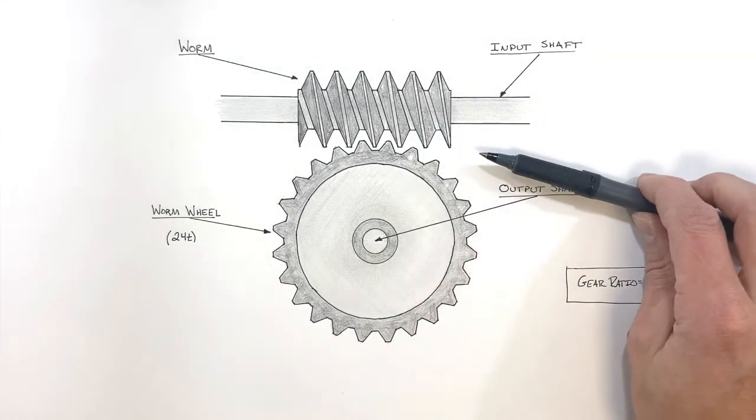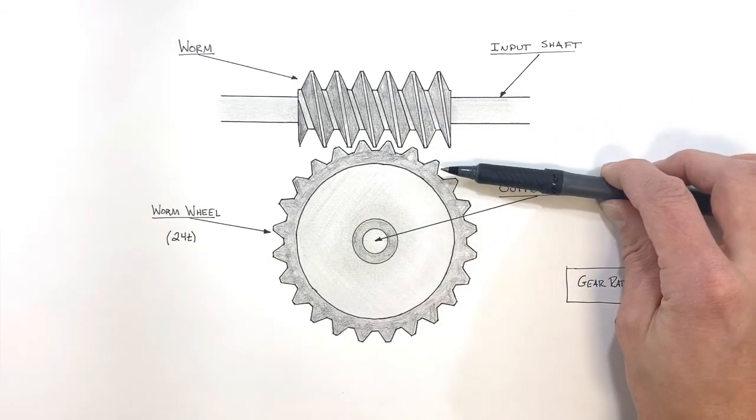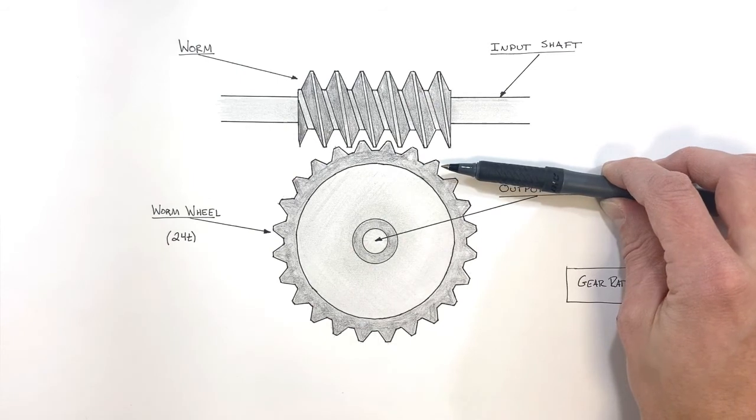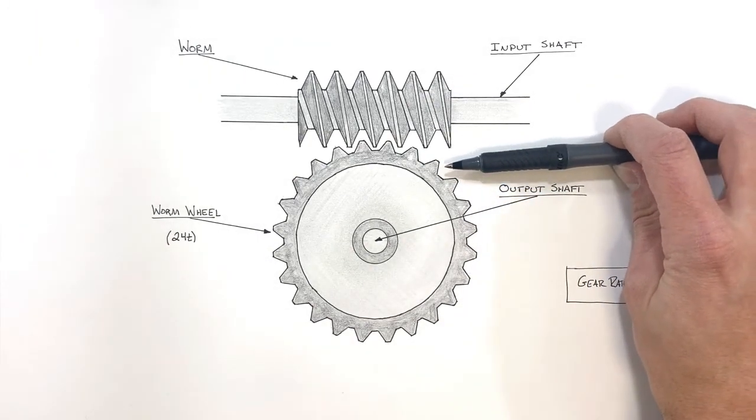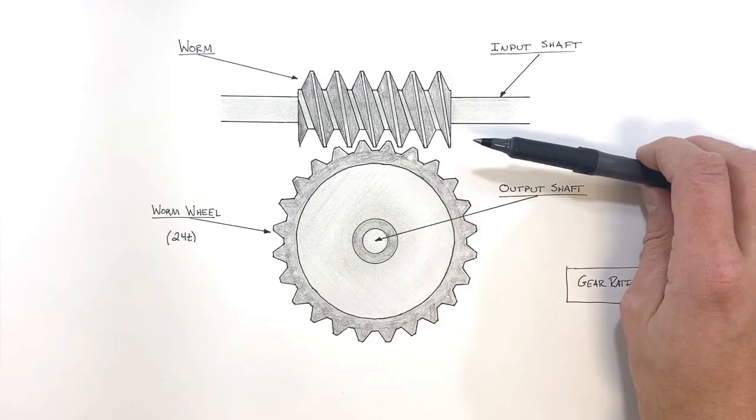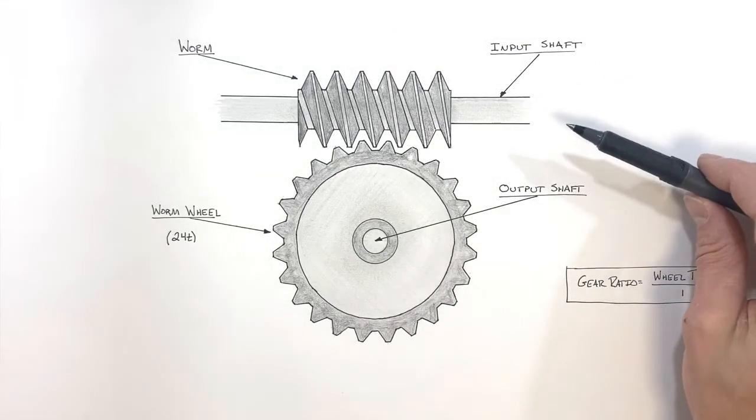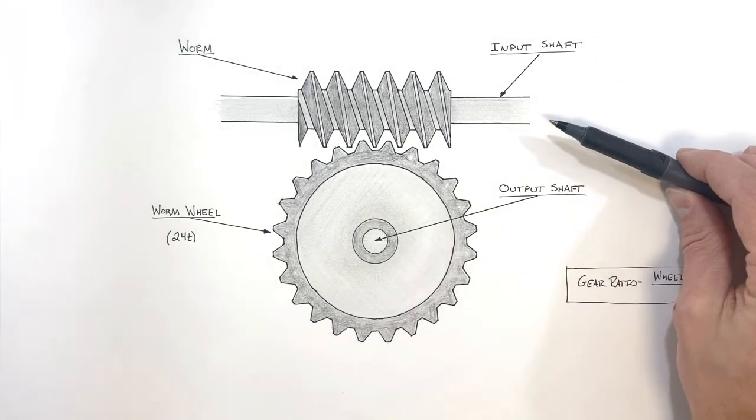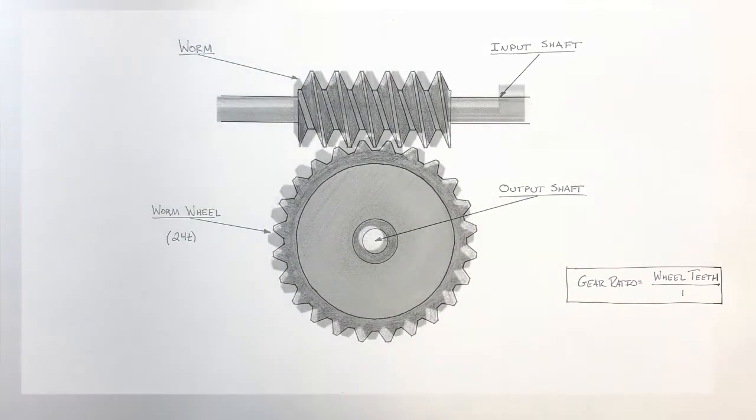The important takeaway is that a worm gear is really nothing other than a screw which has been meshed with a gear. By doing this, we're able to achieve absolutely enormous gear ratios, which can produce huge increases in torque. That comes at the cost of rotations, but in the right circumstance this can be a very useful tool when applied correctly. So that's worm gears and that's all for now.